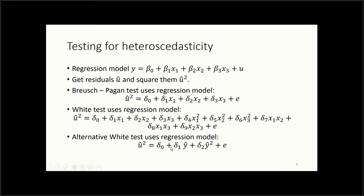The alternative White test uses the predicted value y-hat and y-hat squared from the original regression, instead of the individual x variables. This is similar to the RESET test — because we don't know the functional form of the heteroscedasticity, we try different specifications. In practice, people usually stop with the Breusch-Pagan test; if it shows heteroscedasticity, you're done. But if you're on the borderline, you might also try the White and alternative White tests.